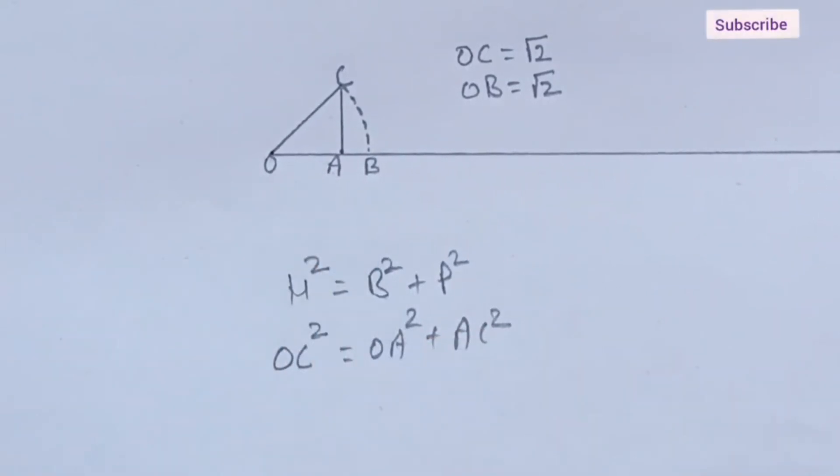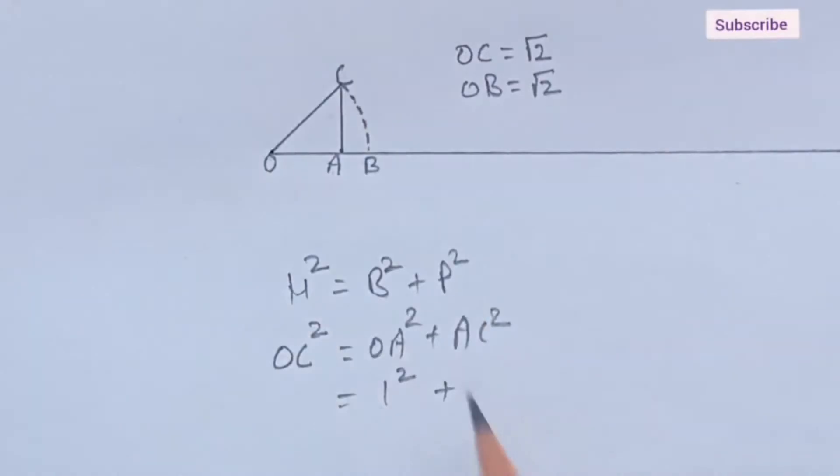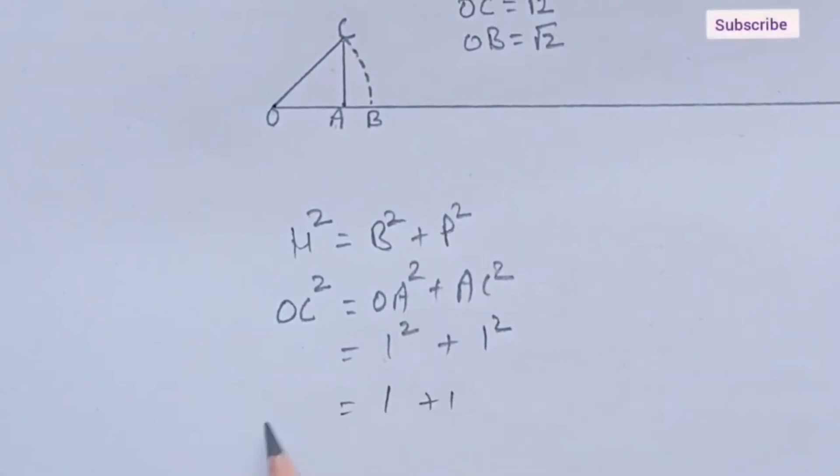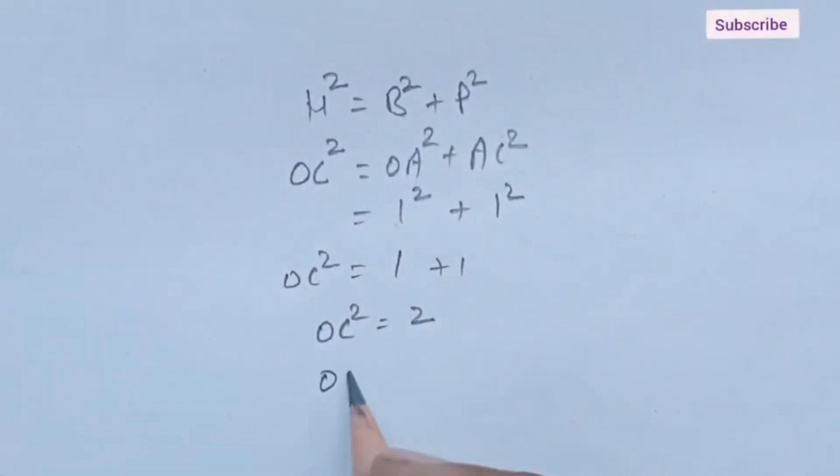OA is 1 cm. AC is 1 cm. So, 1 square is 1, 1 square is 1. OC square. OC square is 2. So, OC value is under root 2.